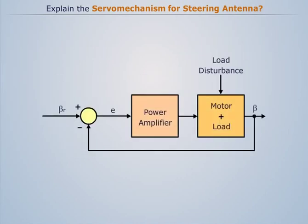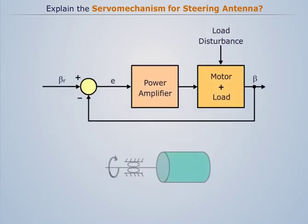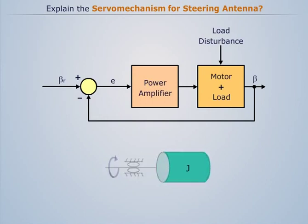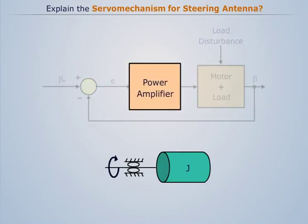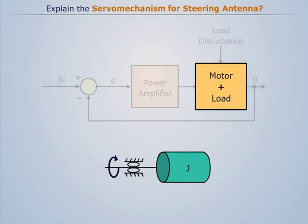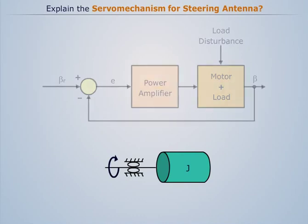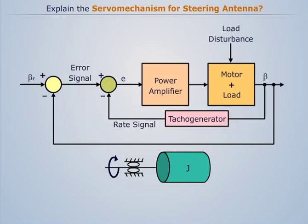Now let's discuss the functional block diagram of the control system. We have two parameters in this model: one is the moment of inertia, and another is the viscous friction coefficient. The error signal passes to the amplifier, by which the angular velocity of the servo motor is increased.